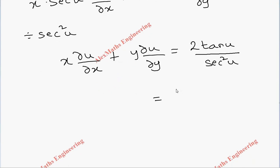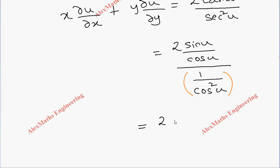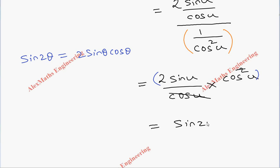Let's change everything in terms of sine and cosine: 2 sin u by cos u, divided by secant square u which is 1 by cos square u. Since we have the denominator in the form of a fraction, we can write the numerator part as 2 sin u by cos u, multiplied by cos square u as a product in reciprocal. Now we can cancel cos u, and we have the basic trigonometric formula sine 2θ equal to 2 sin θ cos θ. So here we have 2 sin u cos u, which can be written as sin 2u.